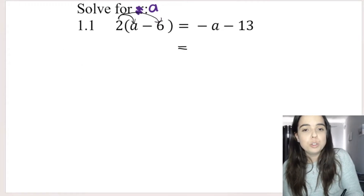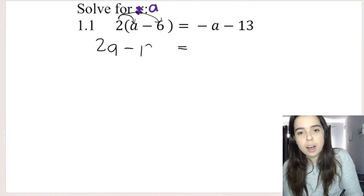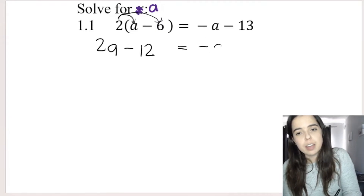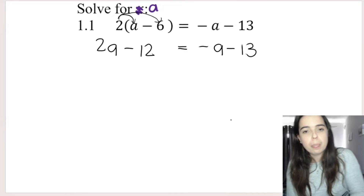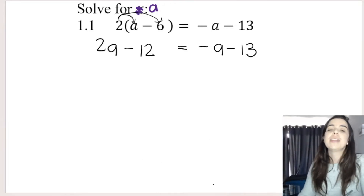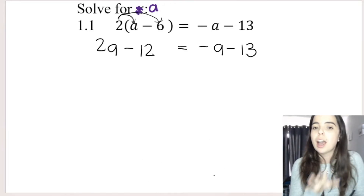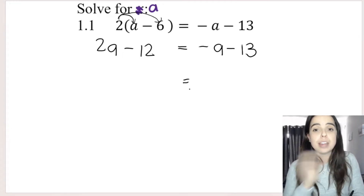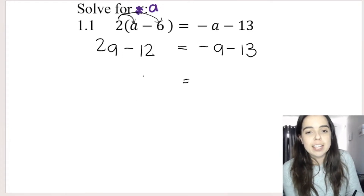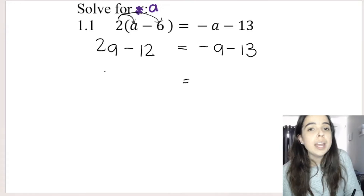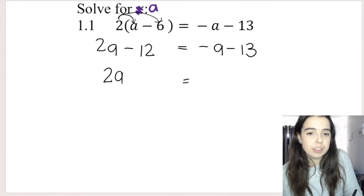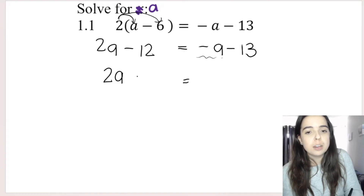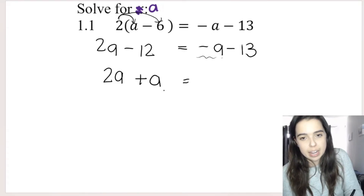Let's distribute. 2 times a is 2a, and 2 times negative 6 is negative 12. On the other side, we've got negative a minus 13. Now we need to get the a's to one side and the non-a's to the other side. I'm going to get the a's to the left-hand side. 2a is already on the left, so I'll leave it. Then I'm going to take this negative a over and it becomes positive a.